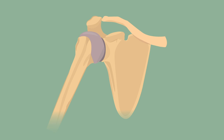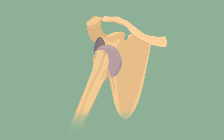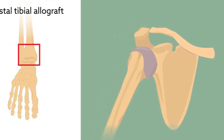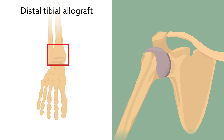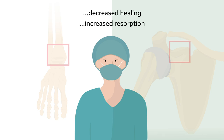Bone graft performance is one of the most important factors for successful glenoid reconstruction to treat anterior shoulder instability. Although distal tibial allografts are gaining popularity over the more commonly used coracoid autografts, many orthopedic surgeons remain concerned about the potential for decreased healing and increased resorption when using allograft bone.